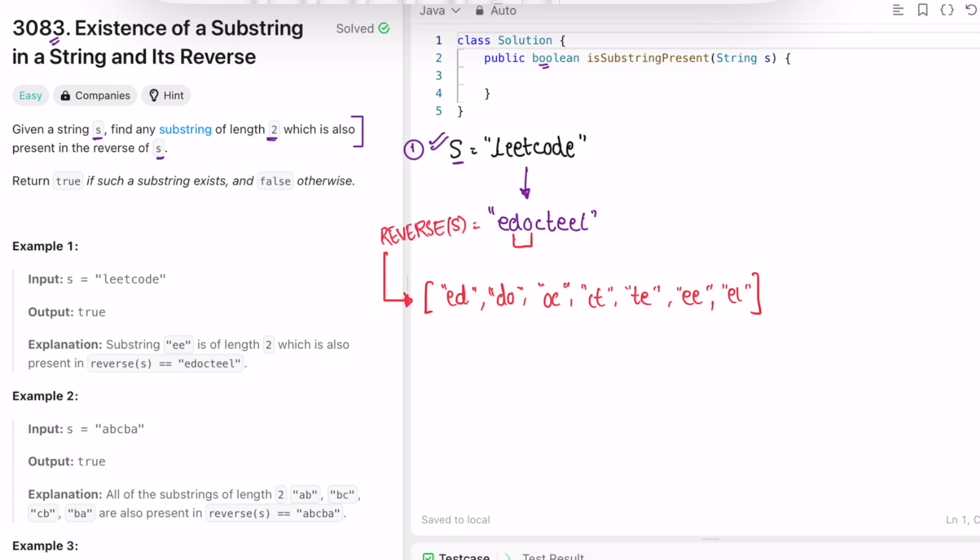Now we find substrings inside this input given to us. First we check 'le' is the substring. We compare if this 'le' is present inside the reverse string substrings. No, it's not present, so take the next substring. Next substring is 'ee'. Check if 'ee' is present inside the reverse string substrings. Yes, 'ee' is present here.